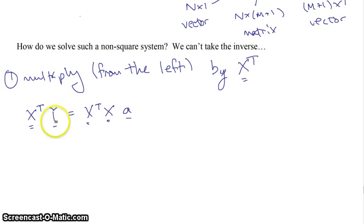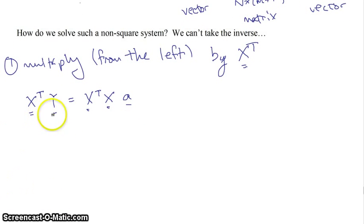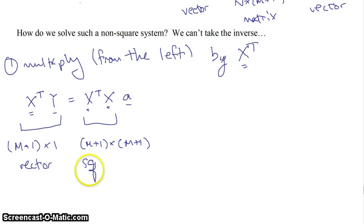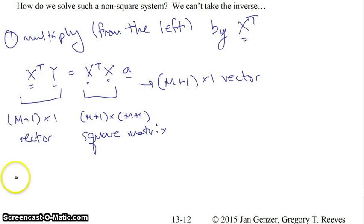So what we're going to do is we're going to put x transpose on the left of each side of the equation. So x transpose times y equals x transpose times capital X times this vector A. And so what we get now is that this here will give us an m plus 1 by 1 vector. This guy here gives us an m plus 1 by m plus 1 square matrix. And this guy here still is your m plus 1 by 1 column vector. And so now you have a square system.